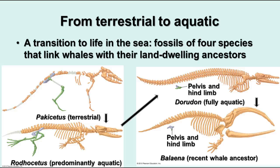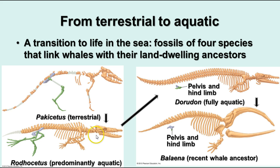Here we see fossils of whale ancestors showing their terrestrial forebears, with the pelvis and limb bones visible. Then we have the Rhodocetus, a similar organism but primarily aquatic. Then a fully aquatic ancestor — look how reduced the pelvis and hind limbs are. And then a more recent whale ancestor called Bellina, where they are even more reduced. These vestigial organs indicate that there was something there that used to be used, but is no longer useful.